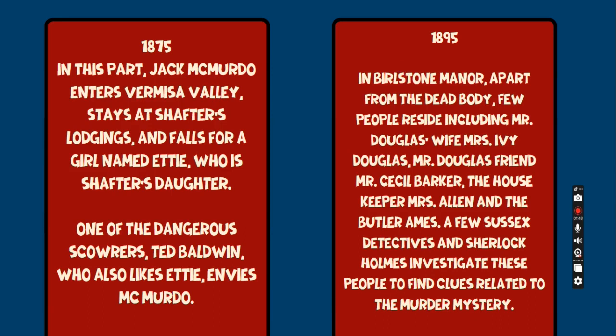1875: In this part, Jack McMurdo enters Vermissa Valley, stays at Shafter's lodging, and falls for a girl named Etty, who is Shafter's daughter. One of the dangerous scourers, Ted Baldwin, who also likes Etty, envies McMurdo.